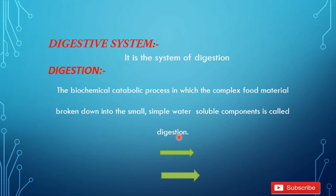The key point to remember is that digestion is a catabolic process. What is a catabolic process? It is a breakdown reaction. First, let me explain the metabolic process. All the chemical reactions going on in the living body are called metabolic processes. There are also some synthetic processes in which something is being made — they are called anabolic processes.